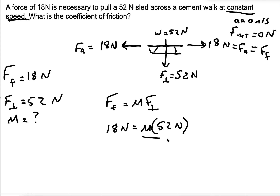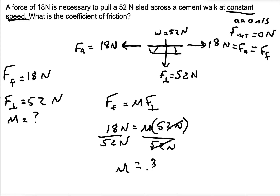I've got to get rid of that 52, so I'll divide both sides by it. These cancel, and mu will be 18 divided by 52 — which is 0.35. Remember, the coefficient of friction does not have units, because it would be Newtons divided by Newtons — no units.